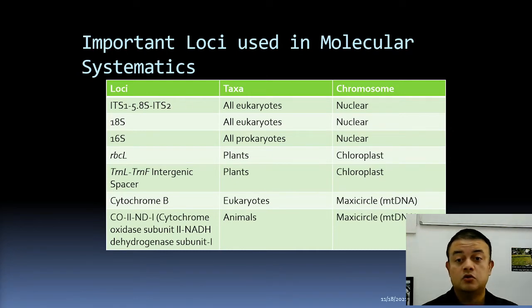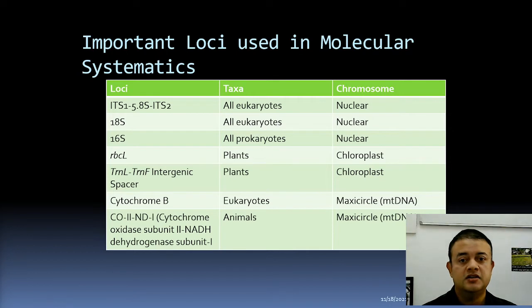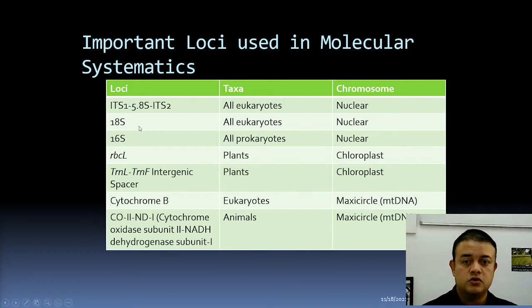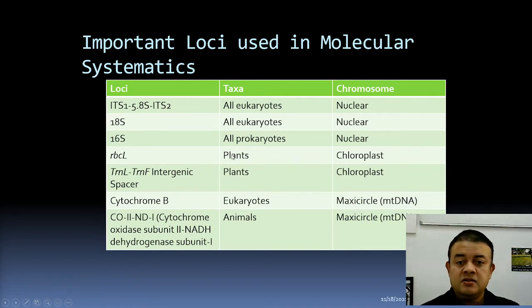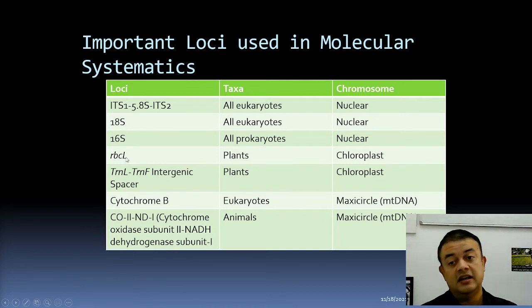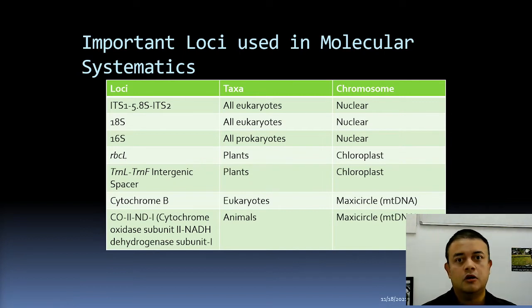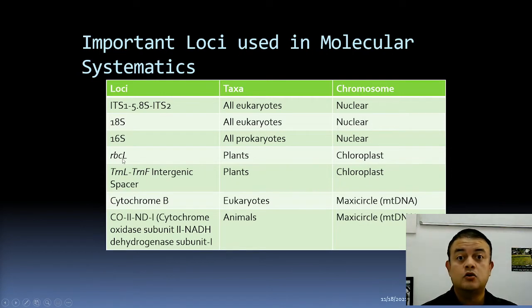For eukaryotes, the ITS1–5.8S–ITS2 region is used across animals, plants, and fungi — probably the gold standard in DNA barcoding. The 18S ribosomal locus is also commonly used for plants and animals. For plants specifically, another very commonly used locus is rbcL — it is a gene, not an intron, coding for the rubisco large subunit.